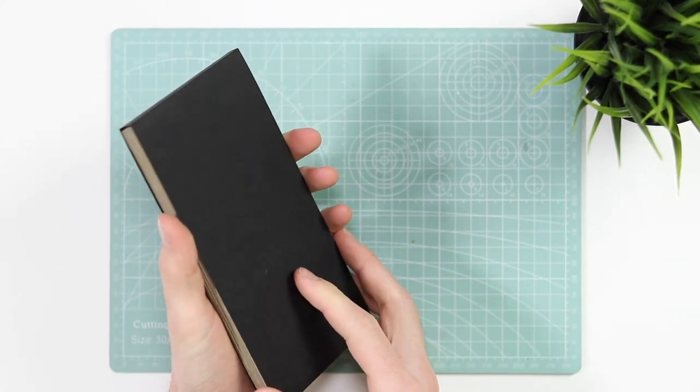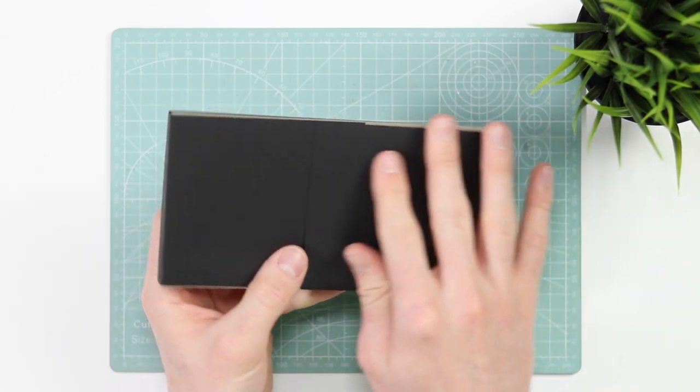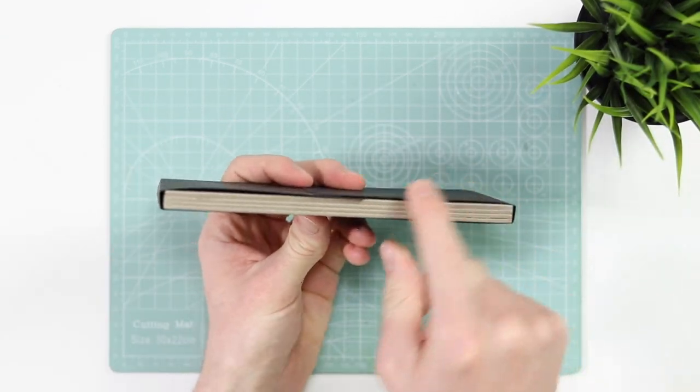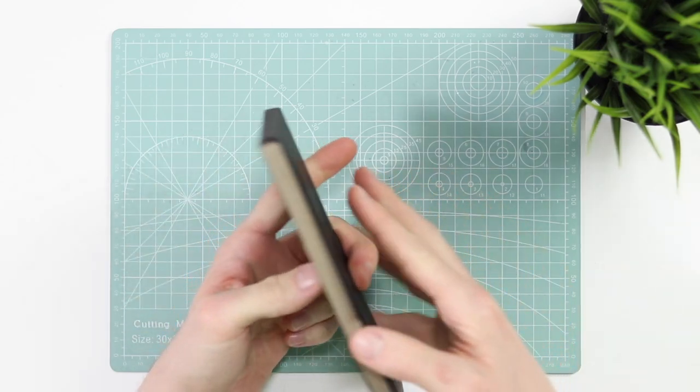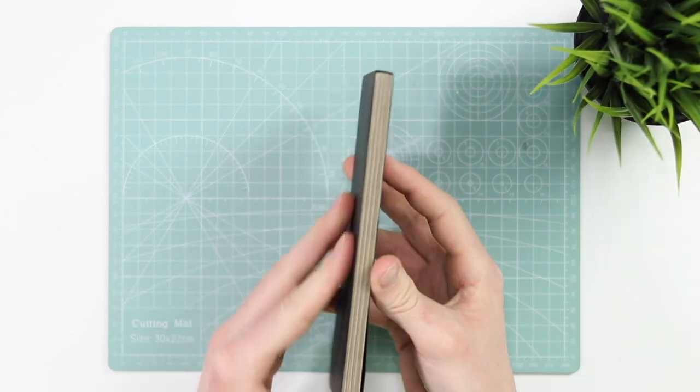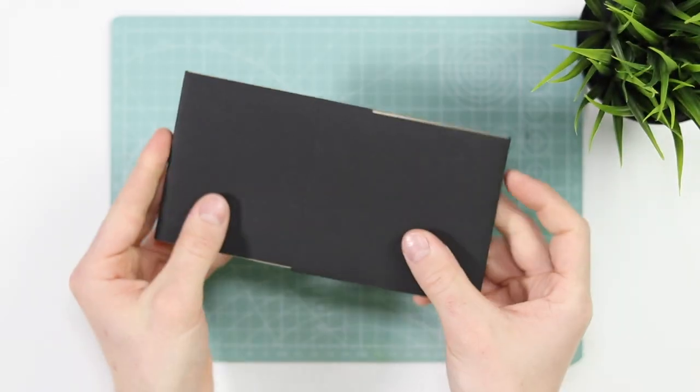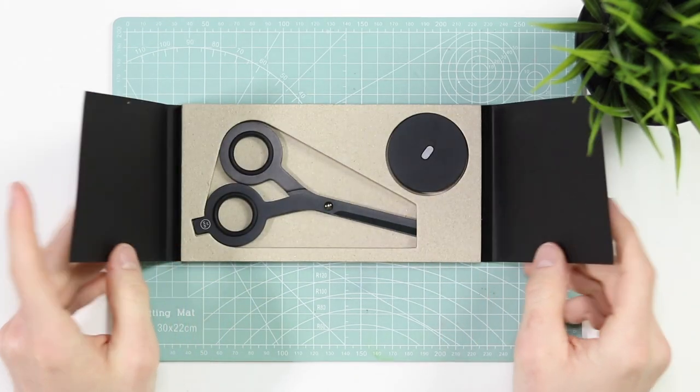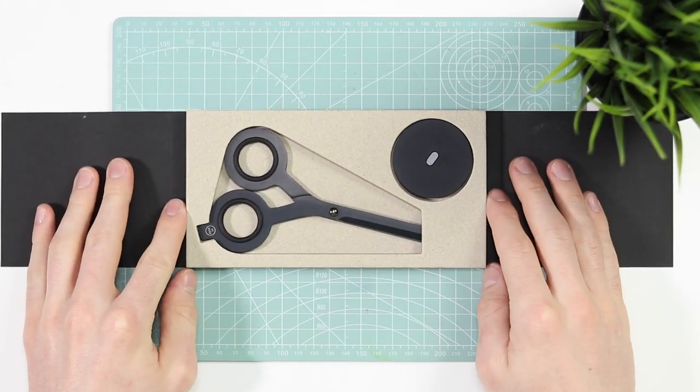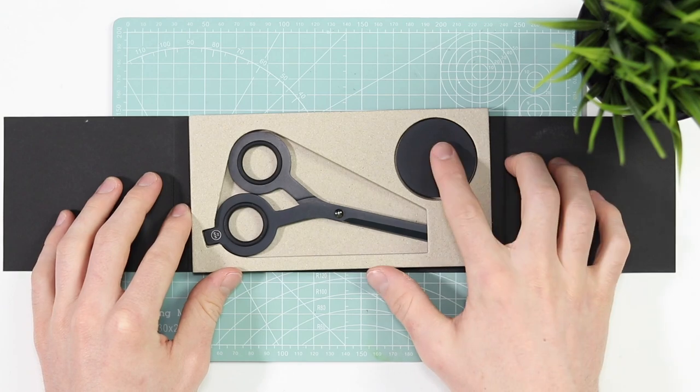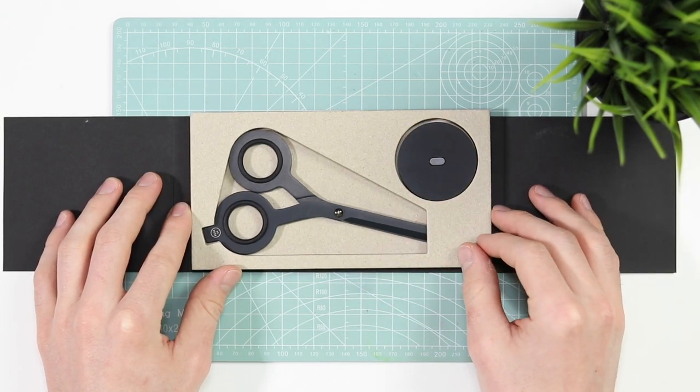When you slide it open, you are greeted with more black matte paper, which is nice, on this cardboard which looks almost like plywood but it's definitely just cardboard. Anyway, here we go. Let's flip it open and boom, there we have the scissors themselves with that little magnetic base there.